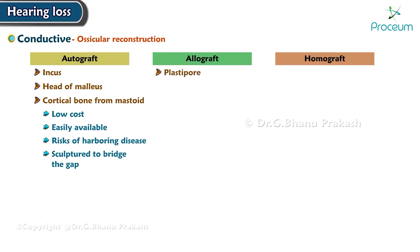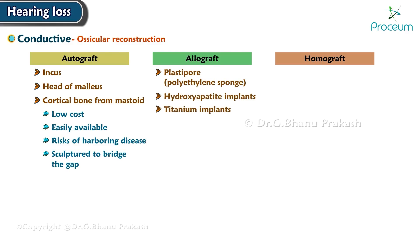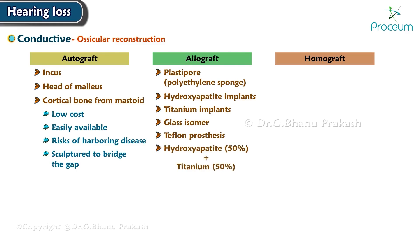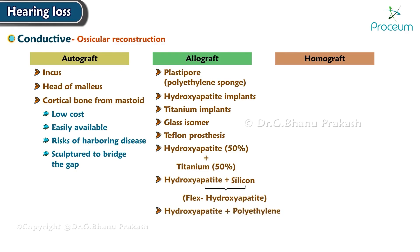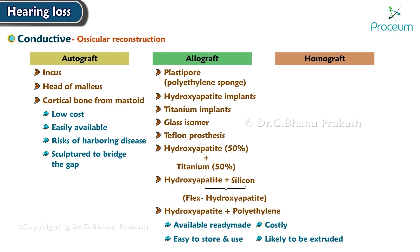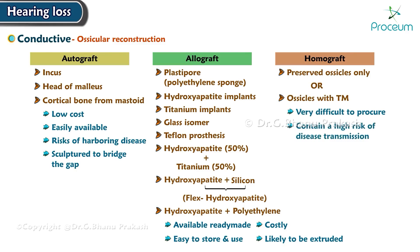Allograft materials include plastipore, polyethylene sponge, hydroxyapatite implants, titanium implants, glass ionomer, Teflon prosthesis, hydroxyapatite 50% plus titanium 50%, hydroxyapatite plus silicone flex, and hydroxyapatite plus polyethylene. They are available ready-made, easy to store and use, but are costly and most likely to be extruded. Homografts consist of preserved ossicles only, or ossicles with the tympanic membrane; they are very difficult to procure and carry a high risk of disease transmission.